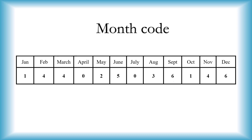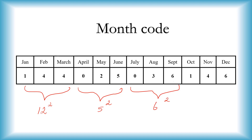So for January the code is 1, February 4, March 4, April 0, May 2, June 5, July 0, August 3, September 6, October 1, November 4, and December 6. An easy way to remember this is by memorizing it three months at a time: 144 (which is 12 squared), 025 (5 squared), 036 (6 squared), and for the last three months, 146. We start with 144 and end with 146.